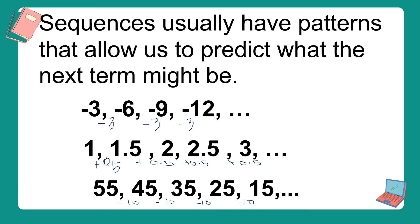Obserbahan natin ang mga example na to. Ano ang napapansin ninyo sa tatlong set na example na to? Base sa pag-oobserba natin, nagsusubtract tayo o nag-a-add tayo ng certain number para makuha yung susunod na term. Kagaya dito sa unang example, constantly nagkakaroon tayo ng negative 3. Sa second example, nag-a-add tayo ng 0.5. At sa third example, nagsusubtract tayo ng 10 para makuha yung susunod na sequence. Ang tawag sa sequence na to, kapag meron silang common difference, ay ang tinatawag na arithmetic sequence.